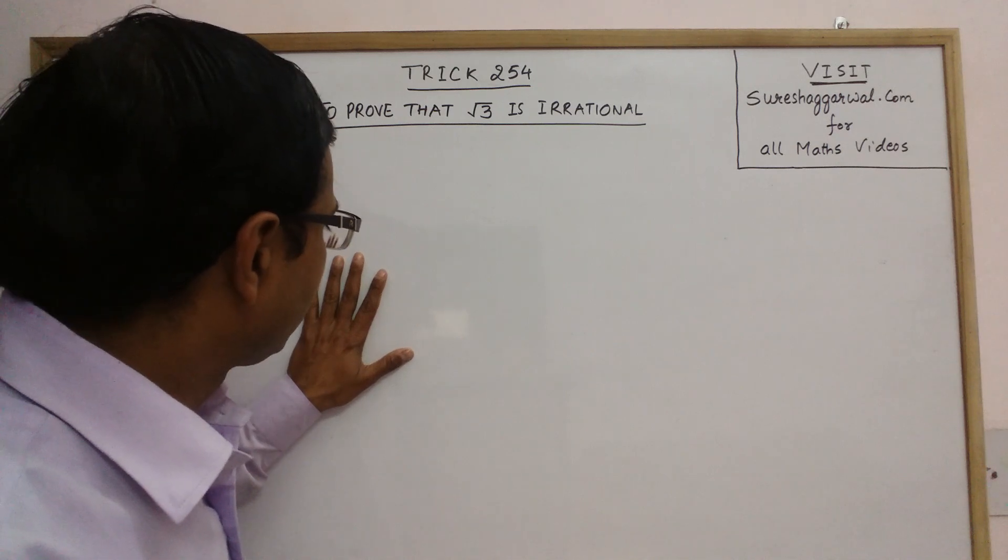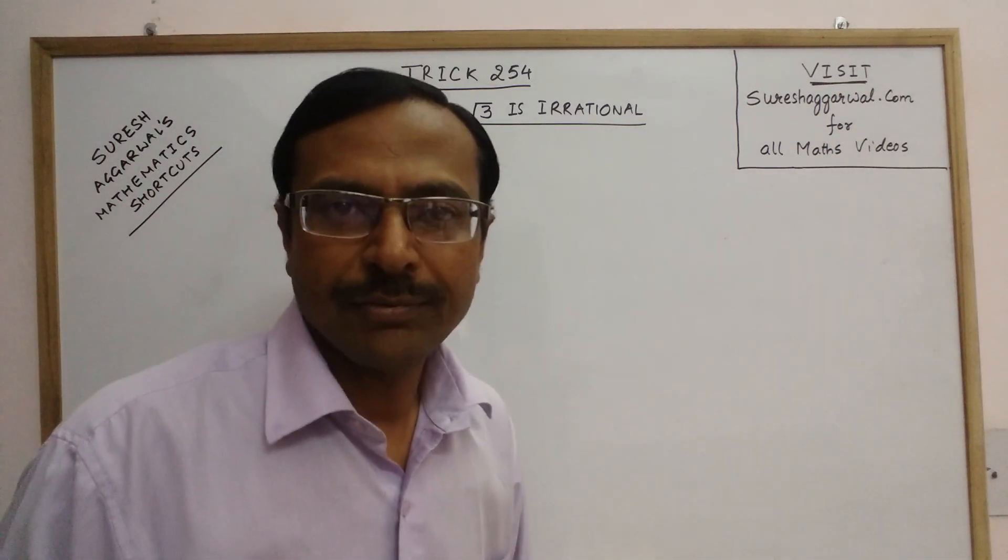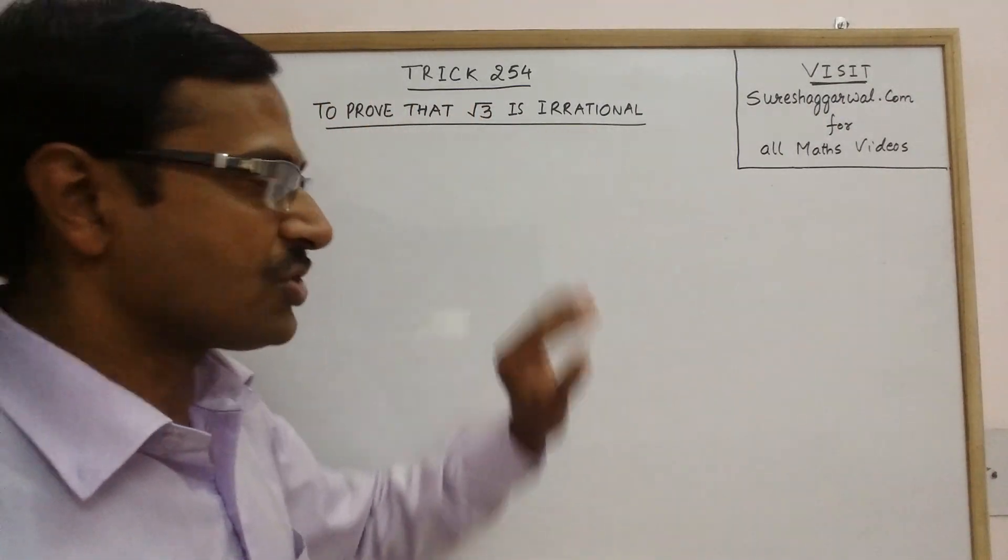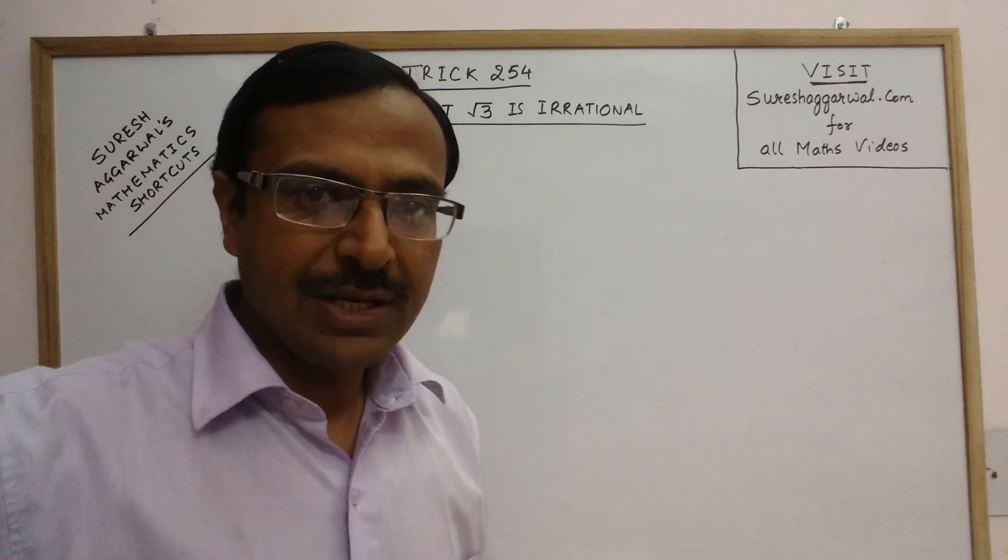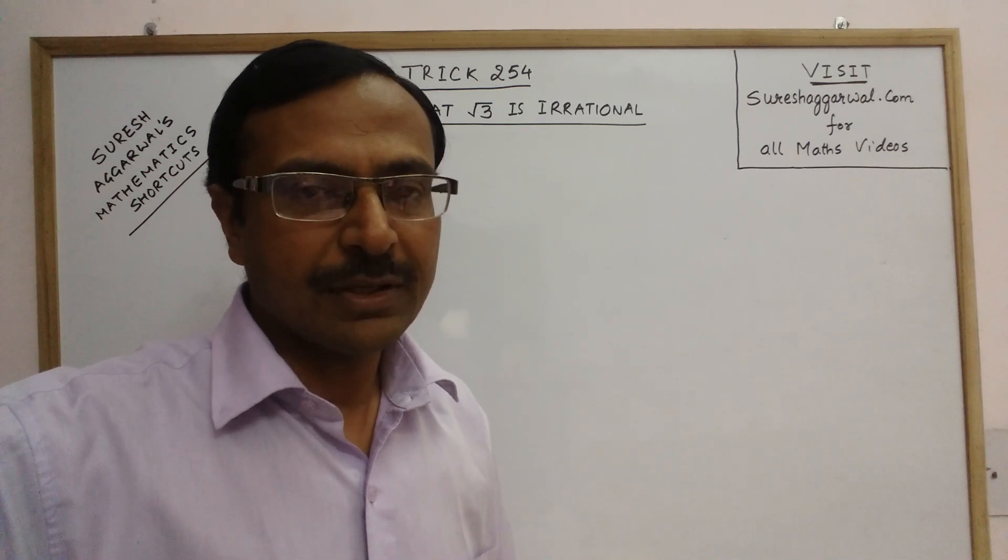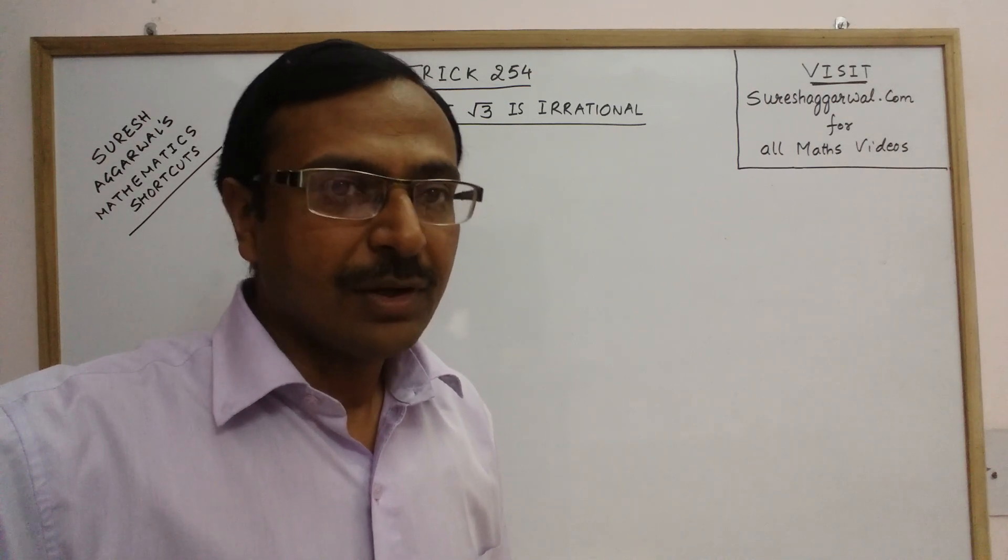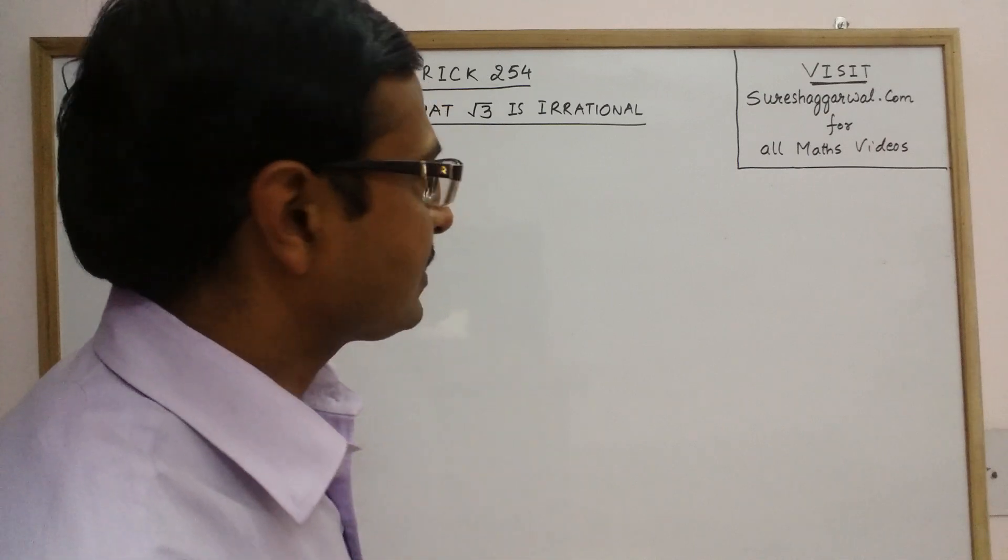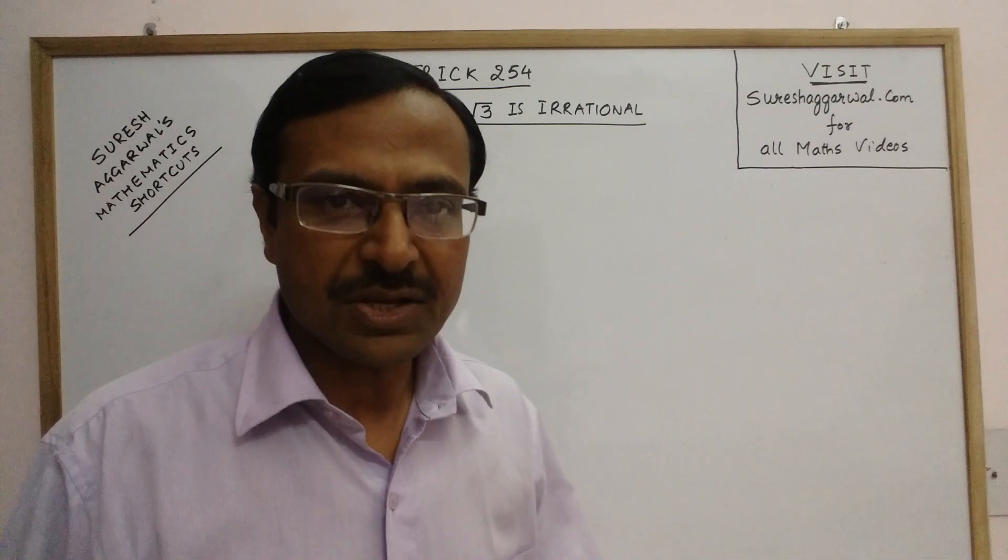Now this is the theorem that the square root of any prime number is always irrational. Now we need to prove that square root of 3. I am taking 3 as an example but the question can be molded into any number, any prime number which comes in the square root. So let us try and prove that root 3 is irrational.